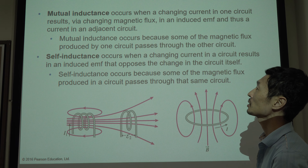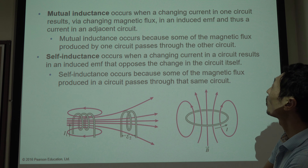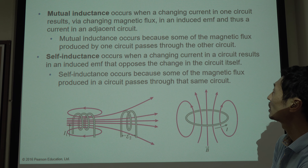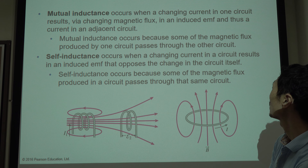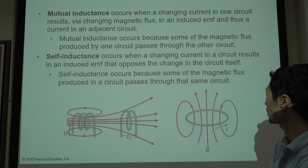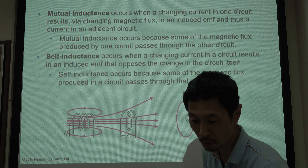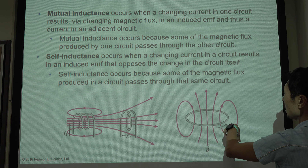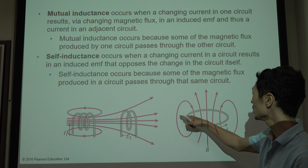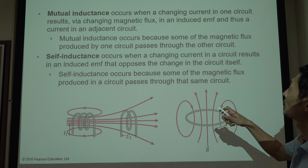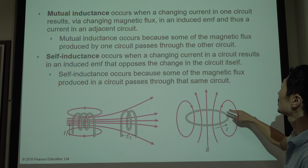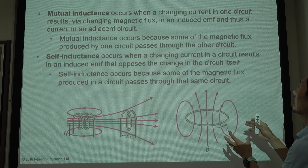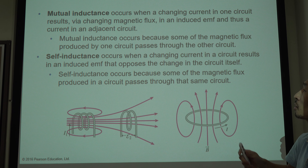Self-inductance occurs when a change in current in a circuit induces a voltage that opposes the change in the circuit itself. Self-inductance occurs because some of the magnetic flux produced in the circuit passes through the same circuit. When you change the current, it induces a voltage to oppose the change in the circuit itself — that's called self-inductance.